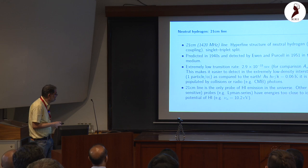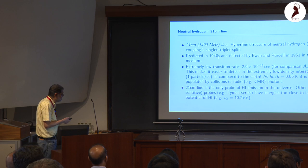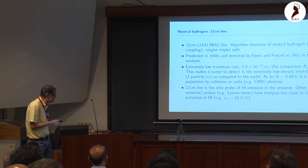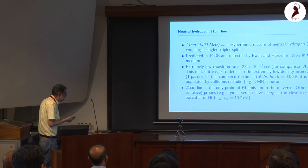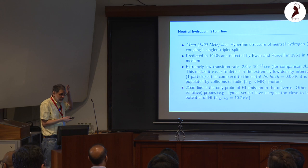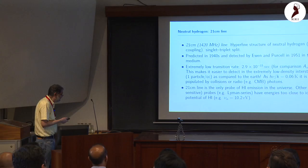HI is the hyperfine structure of neutral hydrogen — a spin-spin coupling. A nice discussion of the quantum mechanics can be found in Peebles' book on quantum mechanics, and the Feynman Lectures are always a good reference. This line was predicted in the 1940s and detected in 1951, a bit later than the heyday of quantum mechanics in the 1920s and 30s.